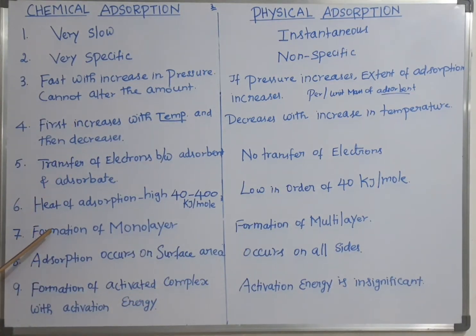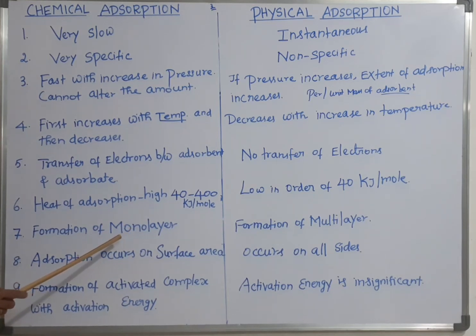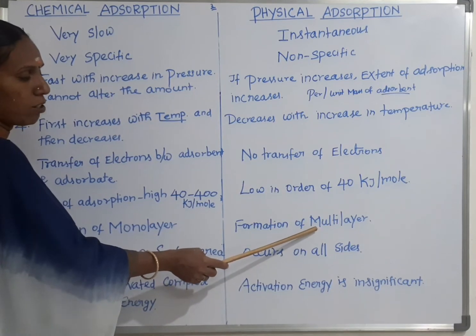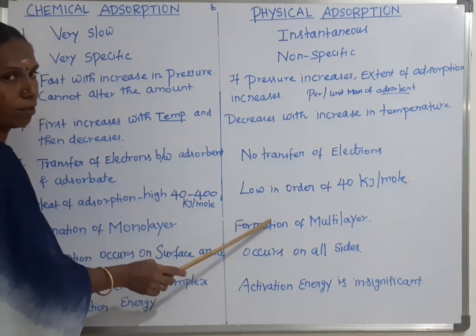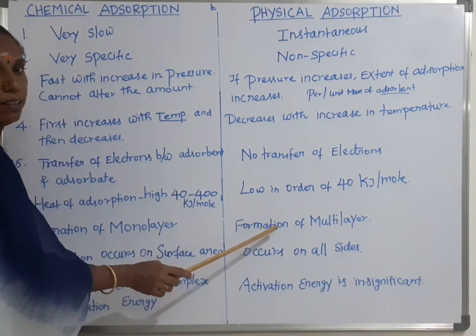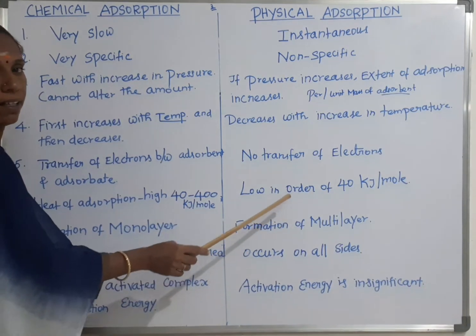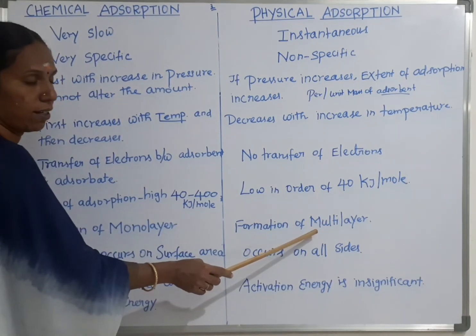Seventh difference: chemical adsorption leads to the formation of a monolayer. The adsorbate molecules are absorbed on the surface as a single layer. But in physical adsorption, there is multilayer formation. The first monolayer acts as the adsorbing surface, allowing further layers to form.